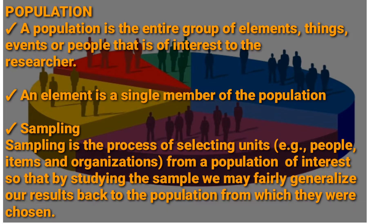The population is the entire group of elements — the whole set of observations — things, events, or people that are of interest to the researcher. That's what we call population. An element is a single member of the population.